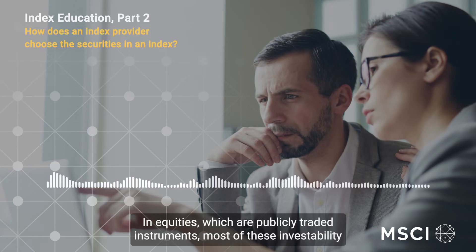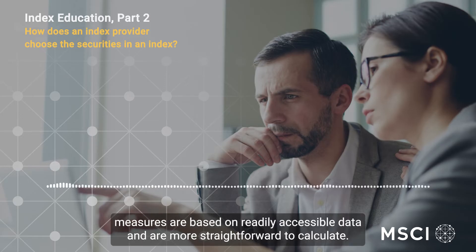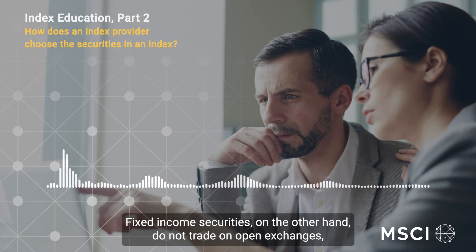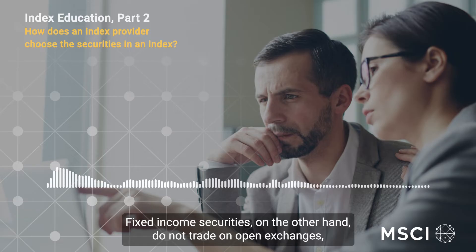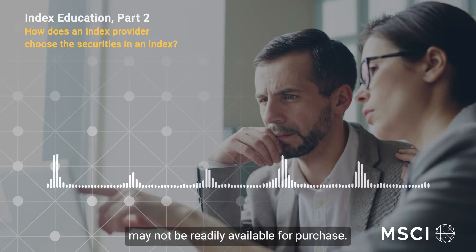In equities, which are publicly traded instruments, most of these investability measures are based on readily accessible data and are more straightforward to calculate. Fixed income securities, on the other hand, do not trade on open exchanges, meaning that their prices are potentially less visible, and that the securities themselves may not be readily available for purchase.